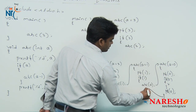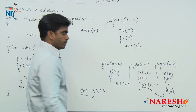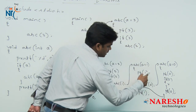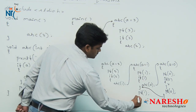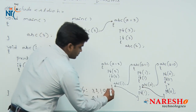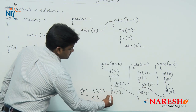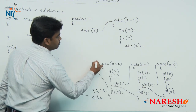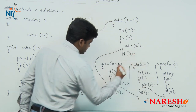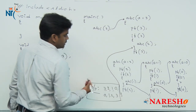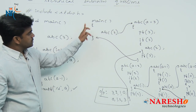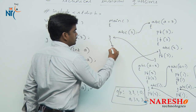Once that execution is over, the control goes back to where it was called from. The last statement there executes and prints the value of a, which is 1. Once this execution is over, the control comes back up and prints the value 2. After printing 2, the control moves back again, and then it prints the value 3. Once that function execution is over, the control returns to the main function, and when the last statement of main is reached, the program execution is completed.